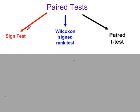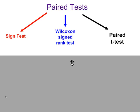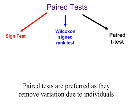We have a choice of three paired hypothesis tests. The sign test and the Wilcoxon test came up in unit S3, and the new one here is the paired sample T-test. The reason for using a paired test is to remove variation down to individuals.